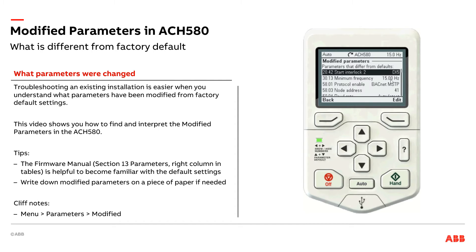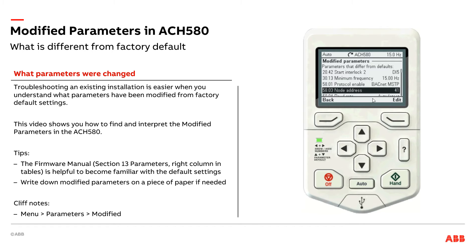I've got minimum frequency set to 15 hertz; the factory default was zero. So I don't want to go below a certain speed or frequency, so I have that set for 15 hertz. I can see that this drive has been configured for BACnet, and the MAC ID is 41. I picked that number because tomorrow happens to be my wife's 41st birthday — hopefully she never watches this video and sees that I'm talking about her age in an ABB training video.